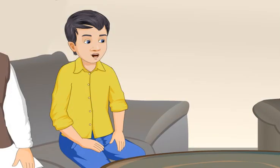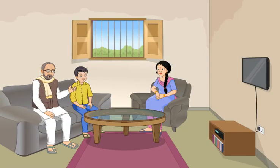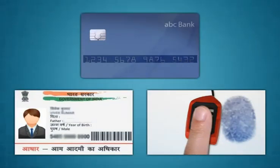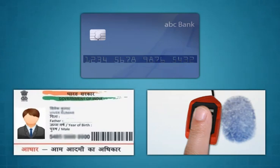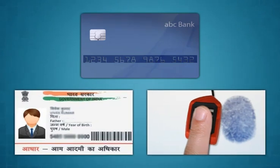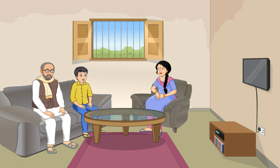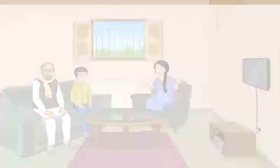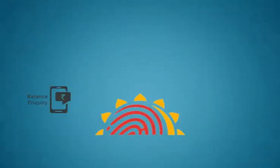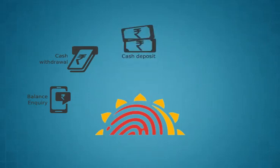It seems interesting. What do I need to activate this service? You require only three things: IIN for identifying the bank to which you are associated, your Aadhaar number, and your fingerprint. AEPS can be used for the following types of banking transactions: Balance Inquiry, Cash Withdrawal, Cash Deposit, Aadhaar to Aadhaar Fund Transfer, and Purchase at Fair Price Shops.